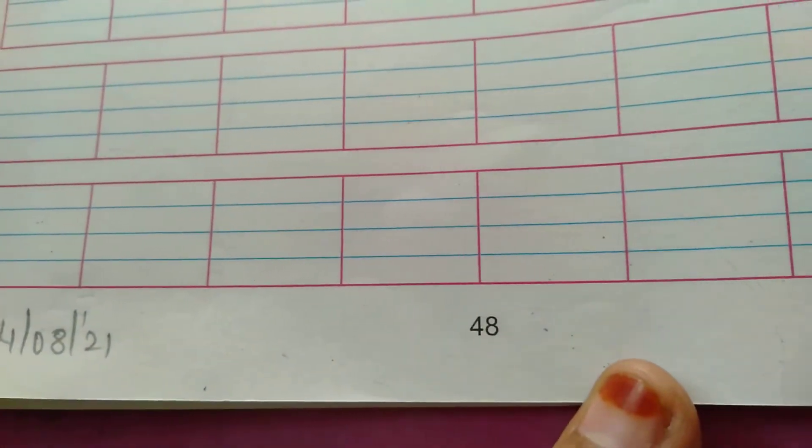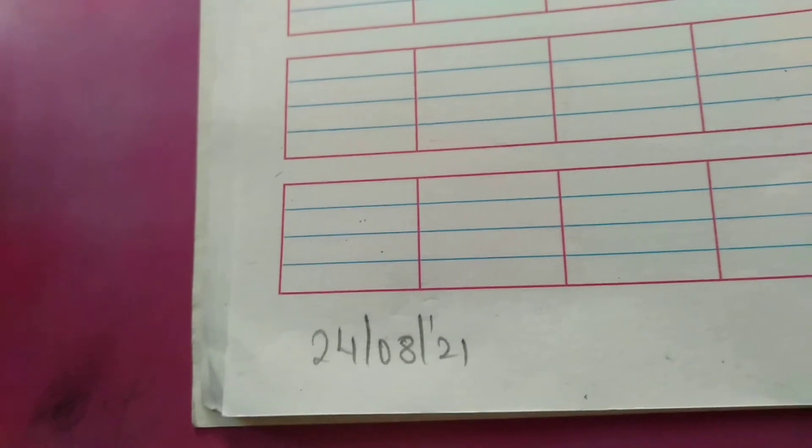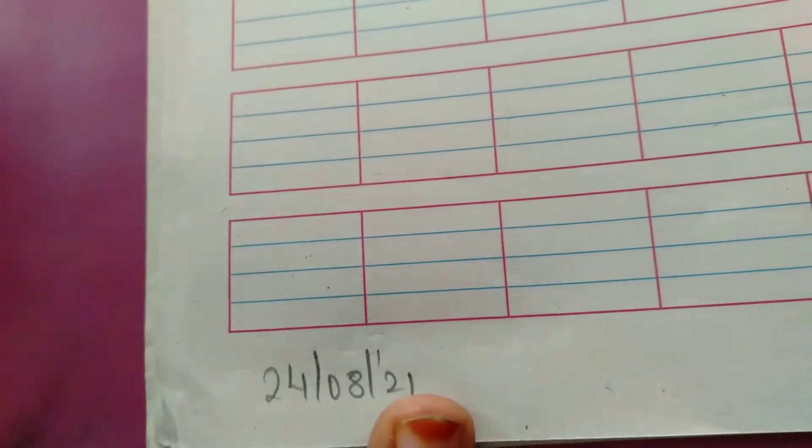So today we write Tha se Thatera. First what will we write? First we write today's date. What is today's date? 24, 8, 21. Classwork and Homework. But first what will we do? We do classwork. Page number 48 and page number 49.